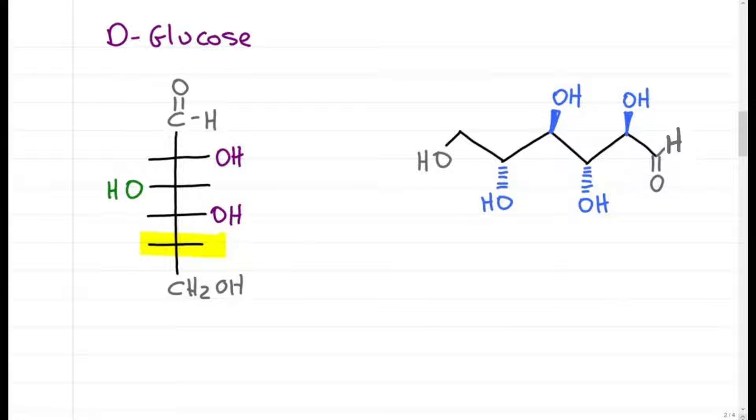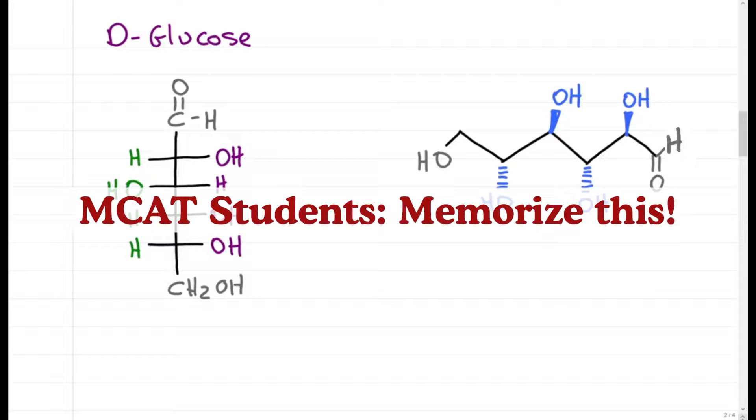The lowest chiral carbon will have the OH on the right for D-glucose and on the left for L-glucose. Here we'll put it on the right for D-glucose. The other side just gets a hydrogen. MCAT students, you do have to know this.